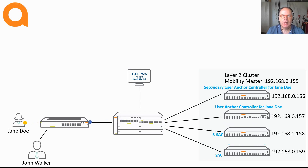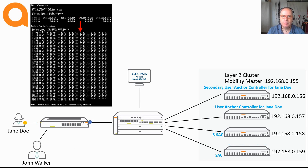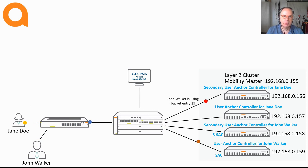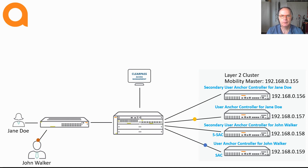When you connect a second device to the network, the control plane is already established so nothing changes from that perspective. However, because of the load balancing functionality, the switch reserves another entry from the bucket map. This entry maps to different controllers, so the user anchor controller and secondary user anchor controller for this device will be different. This is really all you need to know about the concepts of dynamic segmentation — it is time to show you all the different scenarios in action.